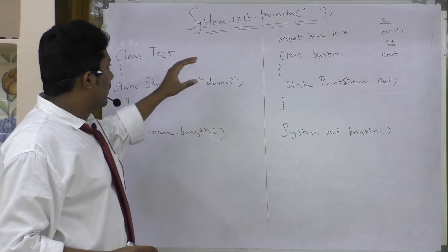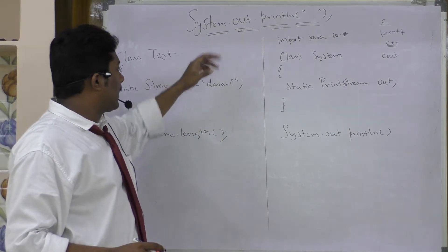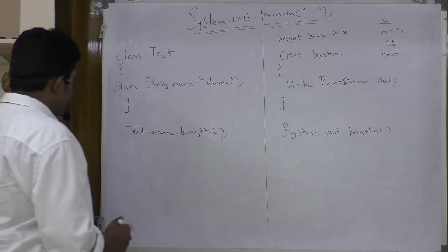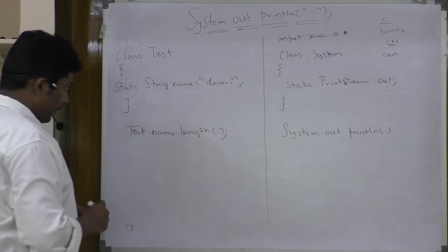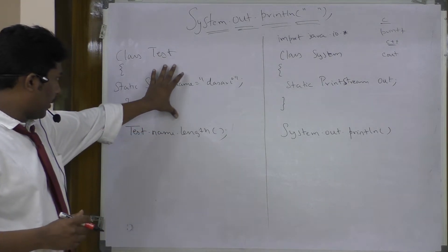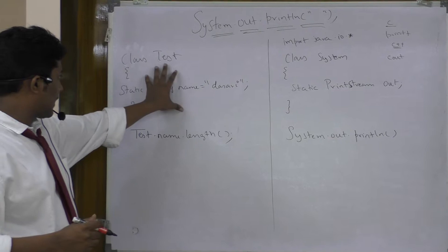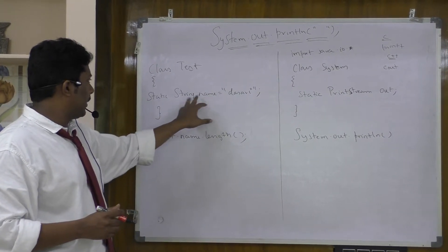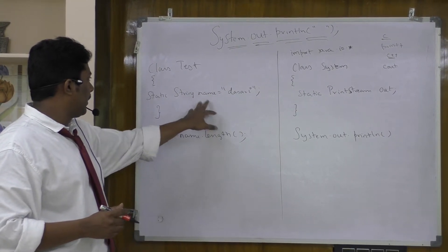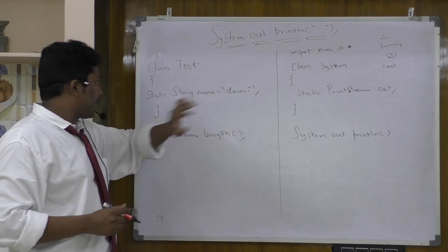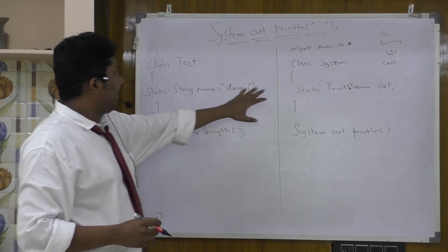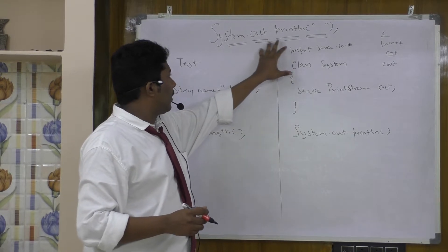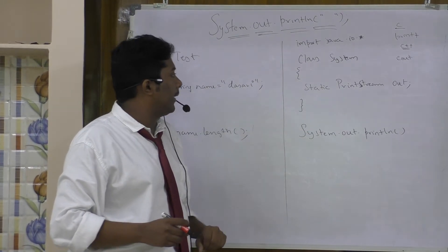We need to study and understand why we have to write something like this. To understand that, let me take a small class here. I have written two small programs. One is class test, and I have declared a static variable of type string, assigned some value, and here the actual system.out.println structure is written.